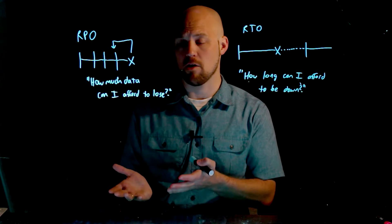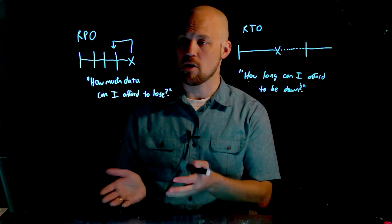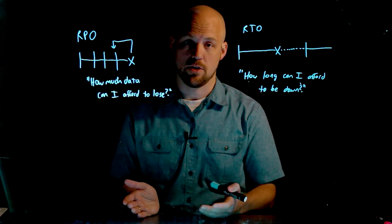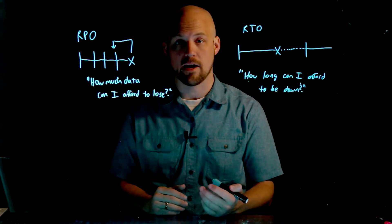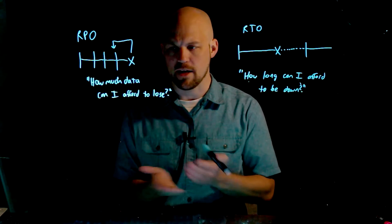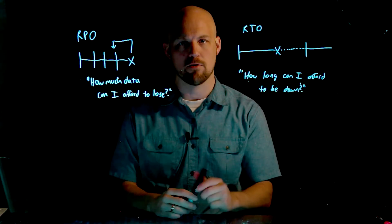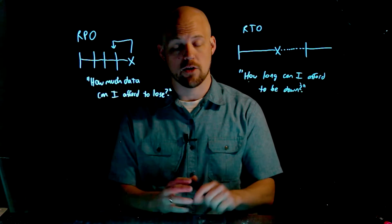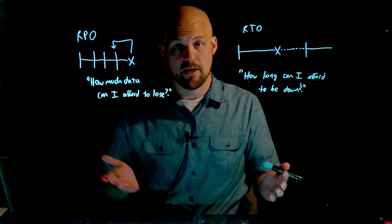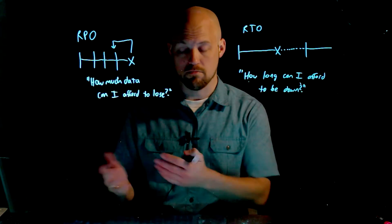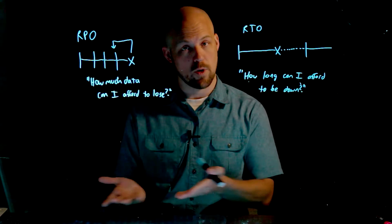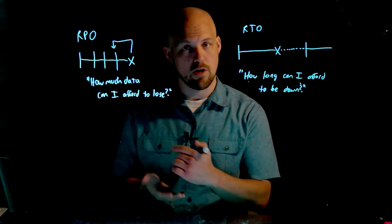So how do we improve our RPO? We improve our RPO by taking more regular snapshots or looking at replication technologies — software overlays that can make sure that we can rewind in time at a granular level, for the applications that require it. For applications that don't, we don't want to spend money we don't need to spend. So we're going to look at 24-hour backups and things like that at the low end.